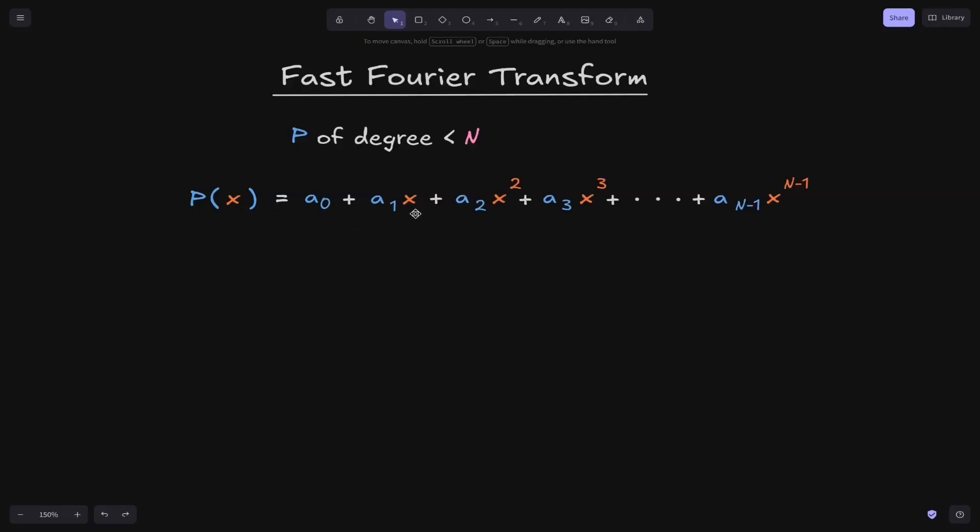Let's say that we are given a polynomial of degree less than N, and we are given the task to evaluate this polynomial at N points. If you were to simply evaluate this polynomial at N points, then the runtime will be big O of N squared. To evaluate a single point for this polynomial, there are N operations, and we need to evaluate at N points. So that's N times N, which is N squared.